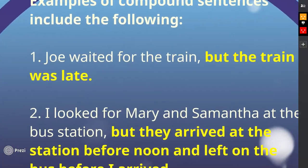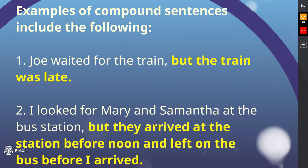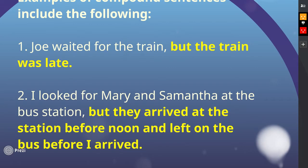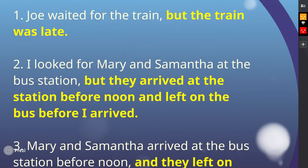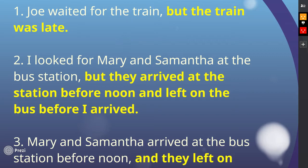Here are some compound sentence examples — they're a little lengthier. In white is the first independent clause, and in yellow or gold is the second one. Joe waited for the train — separate sentence: the train was late — 'but' is the conjunction putting them together. If you forget to put the comma, you have a grammatical error — it's a run-on sentence. So: 'Joe waited for the train, but the train was late.' 'I looked for Mary and Samantha at the bus station, but they arrived at the station before noon and left on the bus before I arrived.' Notice the word 'and' there is not combining two sentences, so you don't need a comma every time you see 'and' or 'but.'